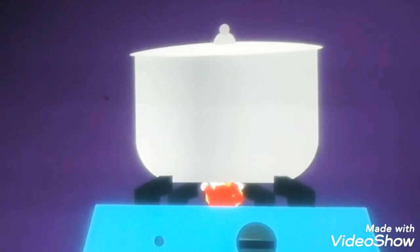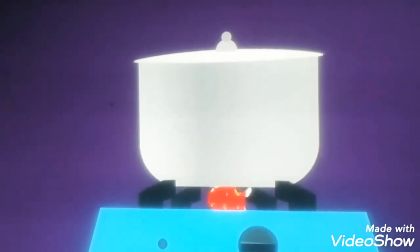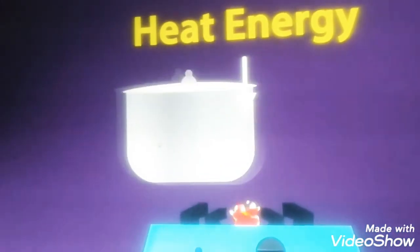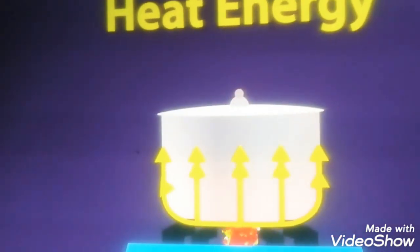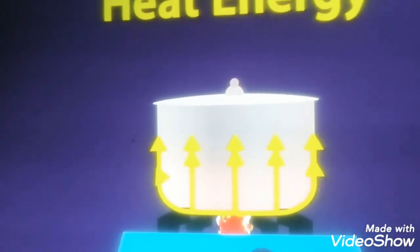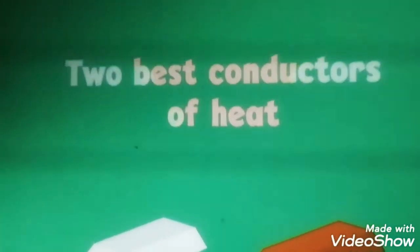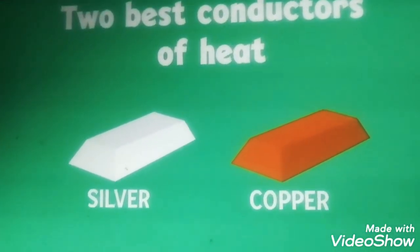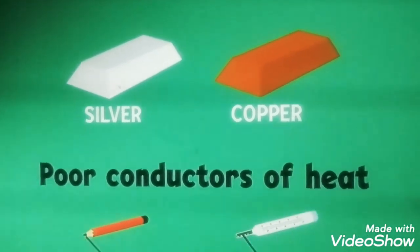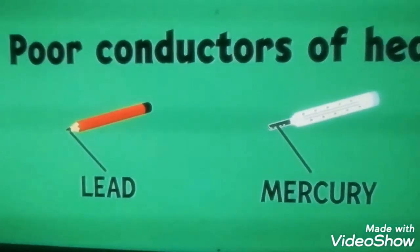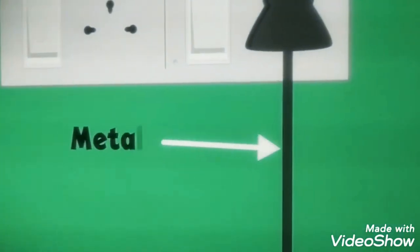Have you observed in the kitchen, children? When you heat any utensil, after some time it gets heated, because with the supply of heat energy the objects are getting heated. How are metal utensils getting heated? Because metals are good conductors of heat. The two best conductors of heat are silver and copper, and the poor conductors of heat are lead and mercury.